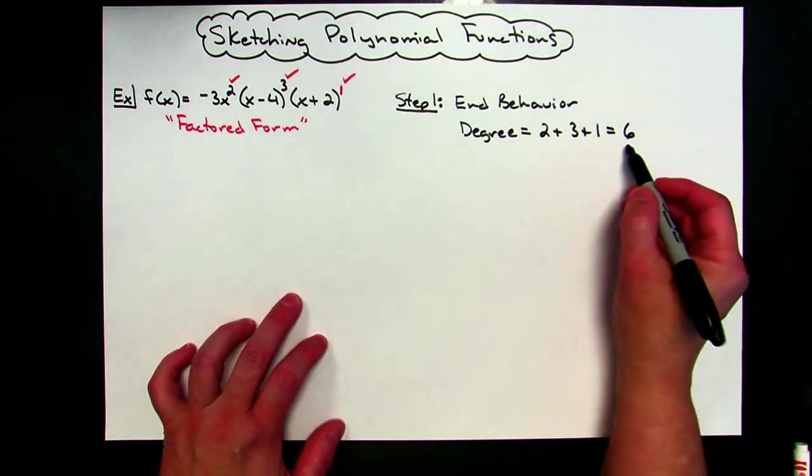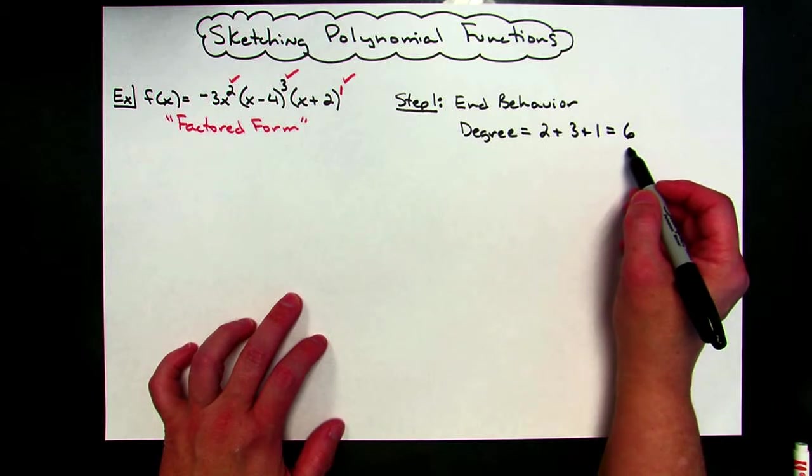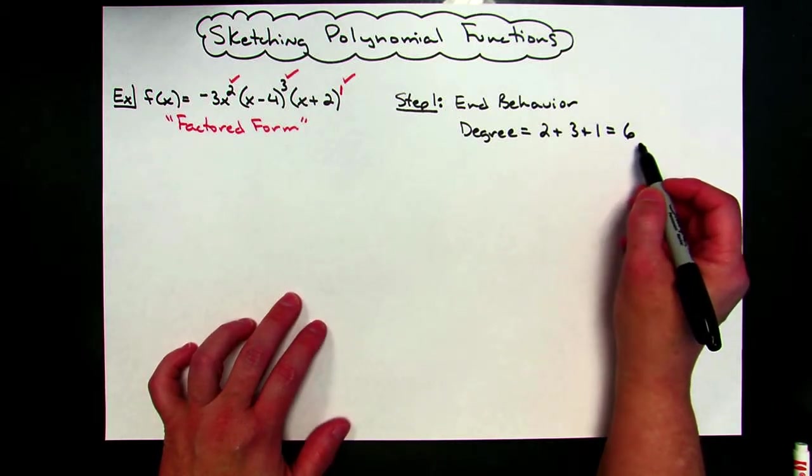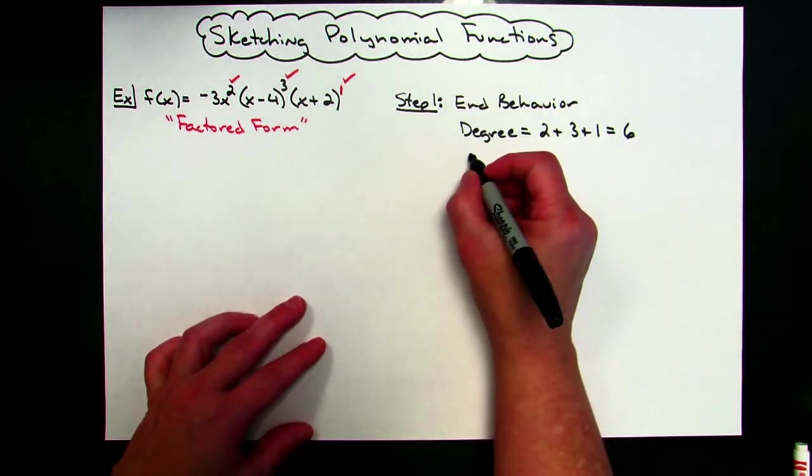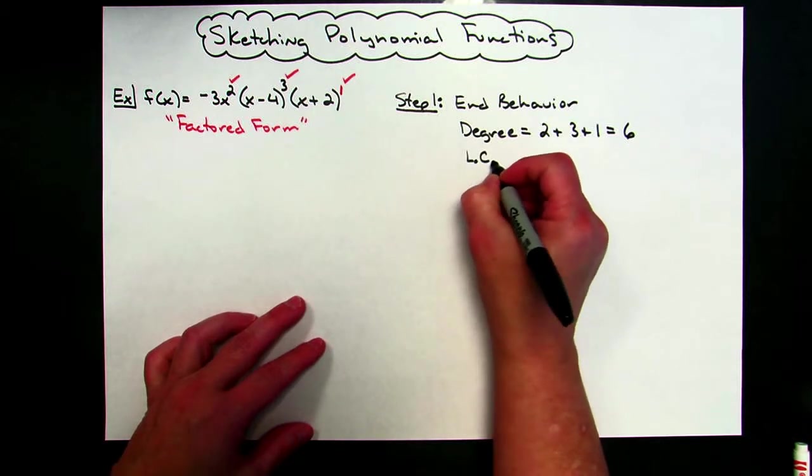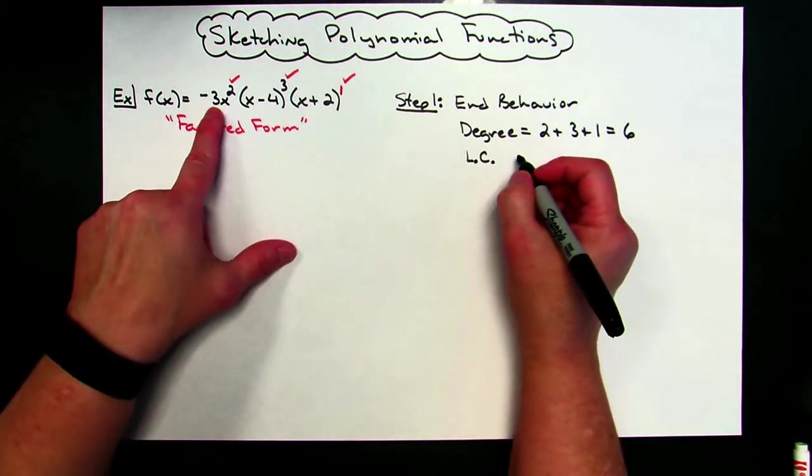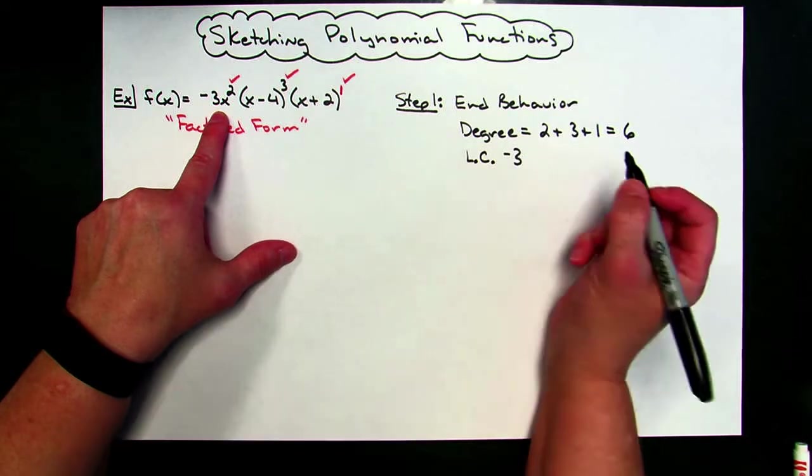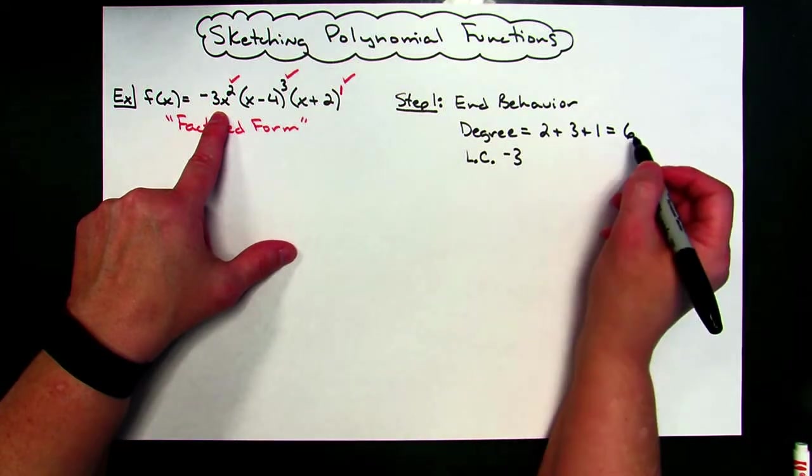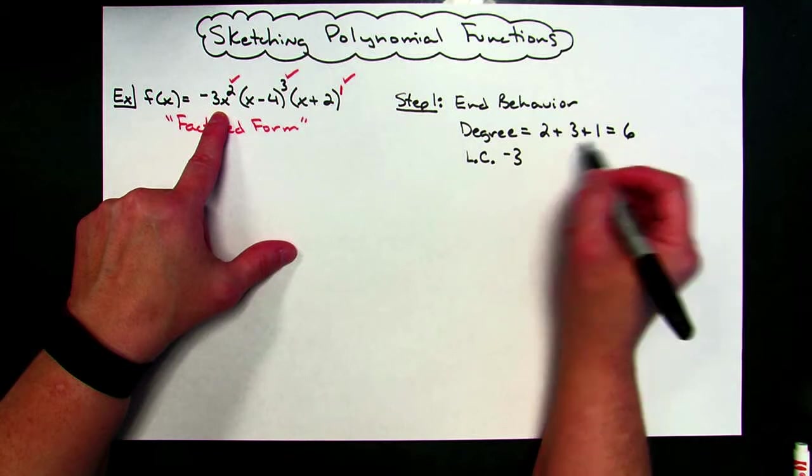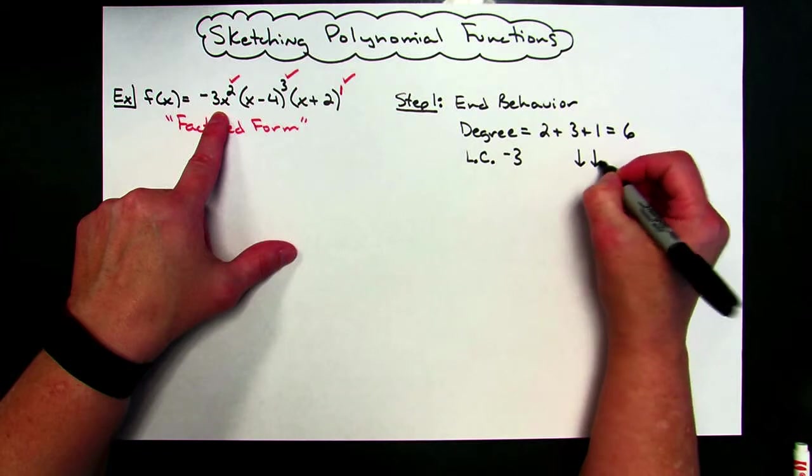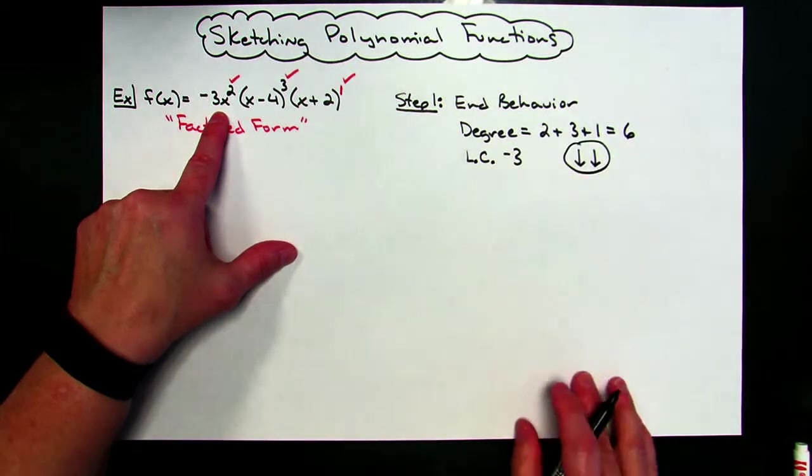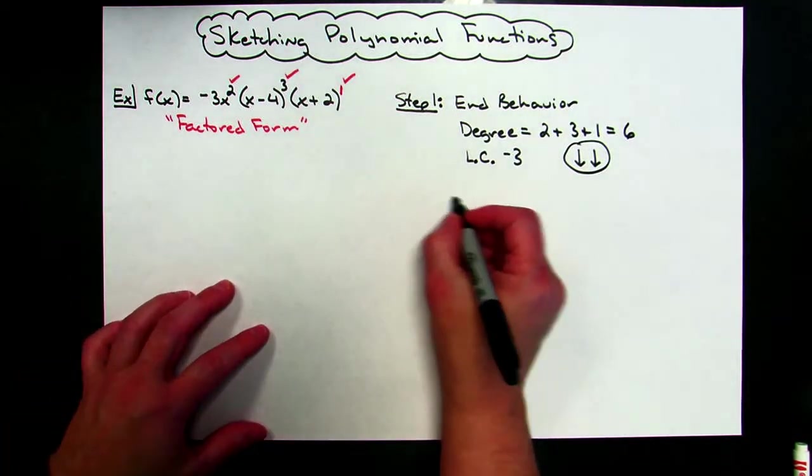All right, basically what that tells me is since it's an even degree, it's going to look like probably either right side up or upside down parabola because it's an even exponent, and then there's going to be many hills and valleys in there that I will predict at a later point in time. Okay, I also need to look at my leading coefficient. My leading coefficient is negative three. All right, so now I've got an even better picture. Not only do I know it's going to kind of look like a parabola, but it's going to definitely be upside down. So that means my end behavior is going to be down, down. So I have determined my end behavior.